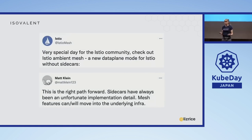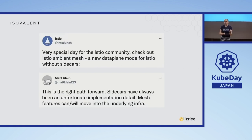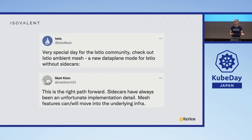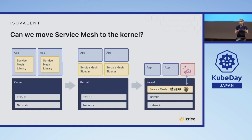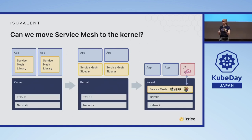Cilium was the first to implement service mesh without sidecars, but now Istio has also followed suit with the ambient mesh approach. There are some differences in how Cilium and Istio are approaching this, but they're both taking sidecars out of the equation. They both use Envoy proxy to handle the complexity of layer 7. Sidecars have always been an unfortunate implementation detail — mesh features will move to the underlying infrastructure. That's from Matt Klein, who originally wrote the Envoy proxy. With Cilium, we've moved a significant part of that service mesh functionality into the kernel itself, and we delegate responsibility to the Envoy proxy in user space to handle layer 7 complex processing.